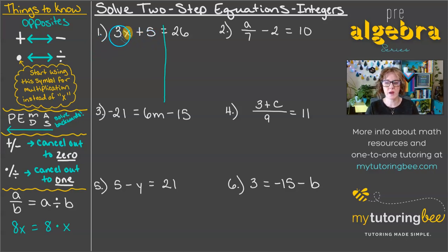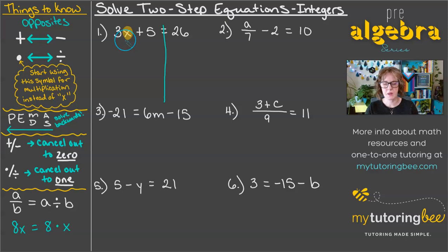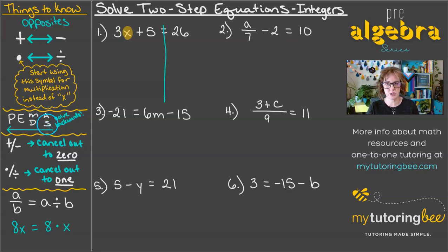We need to undo all of these other operations so that we just have an x left on the left-hand side. We've got 3 being multiplied times x, and 5 being added to that x term. When solving equations with more than one step, we always want to work in backwards PEMDAS, or reverse order of operations. That means we're going to undo any addition and subtraction first before we move on to multiplication or division.